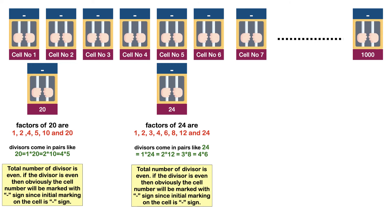Now, the next big question is: does this hold good for all numbers? The answer is no. This trend is not followed if the number is a perfect square. In a perfect square, the total number of divisors will become odd.